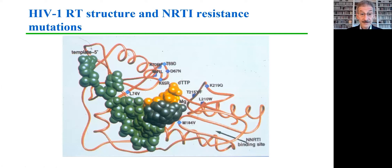This slide shows a ribbon diagram of the reverse transcriptase. Here you see the mutations that confer resistance to thymidine analogs, and here the resistance position for 3TC and FTC. You can see the RNA template, the growing DNA complement, and the incoming triphosphate — in this case thymidine triphosphate.